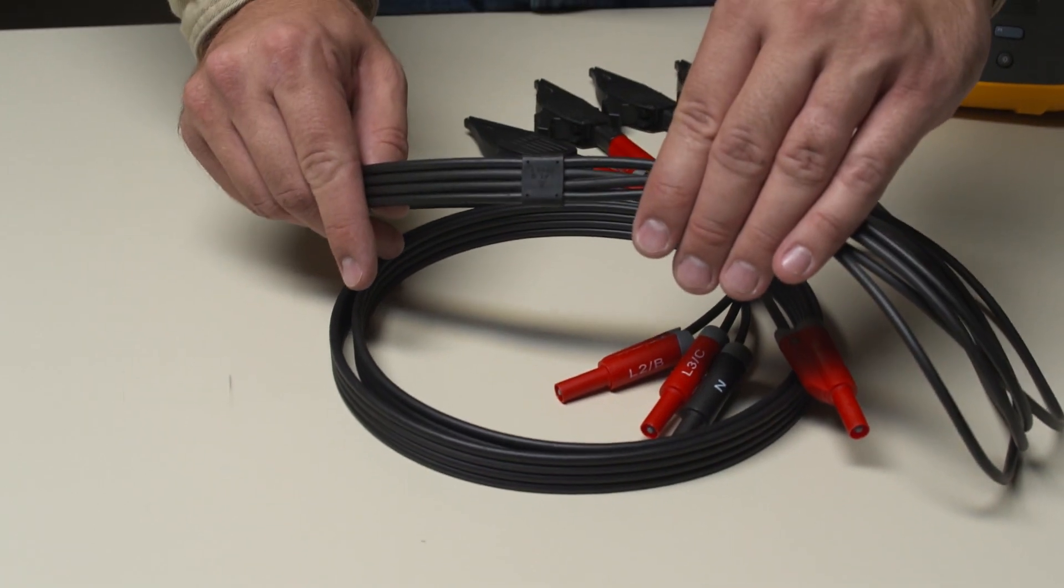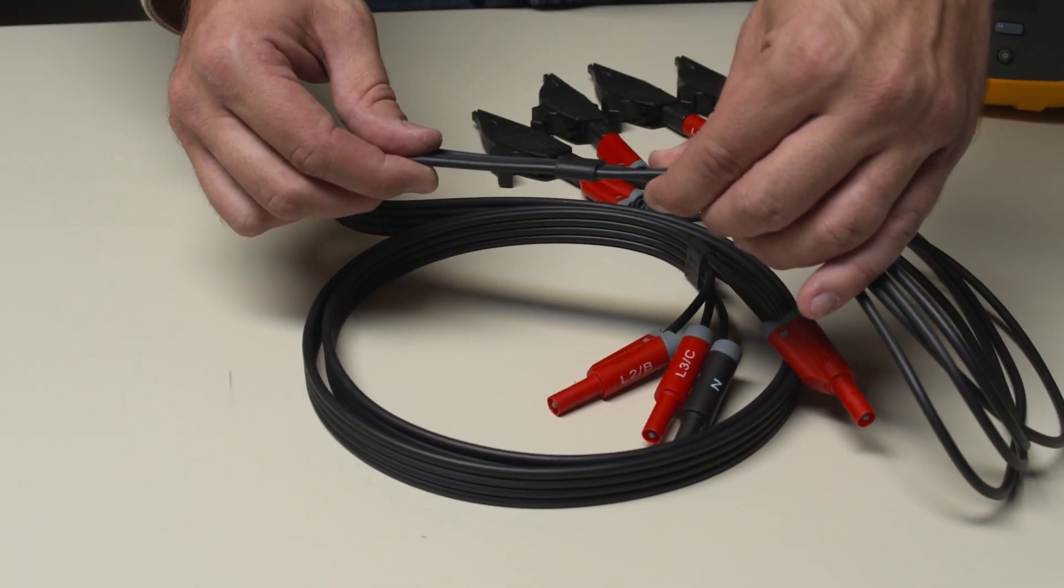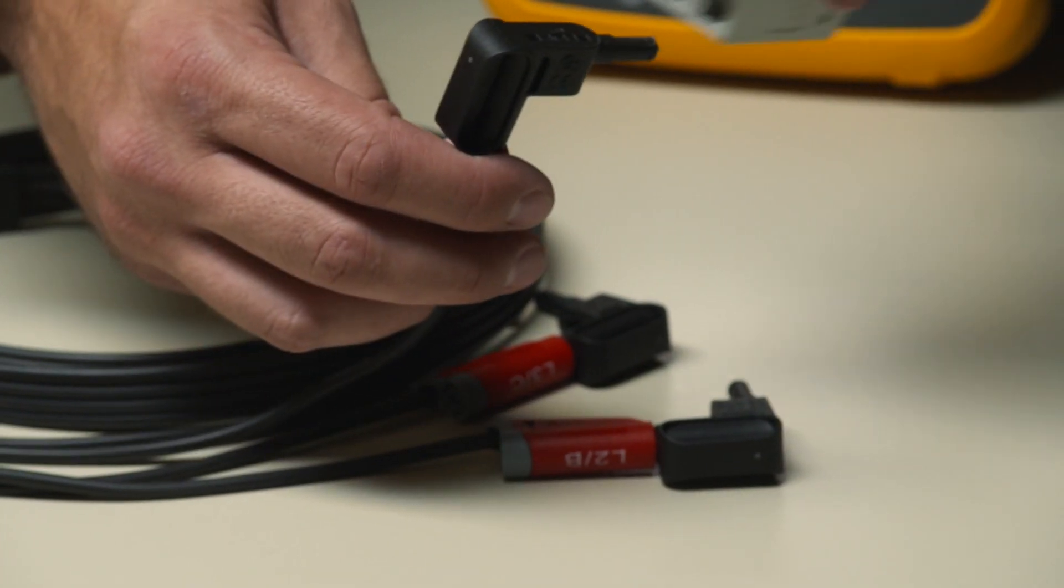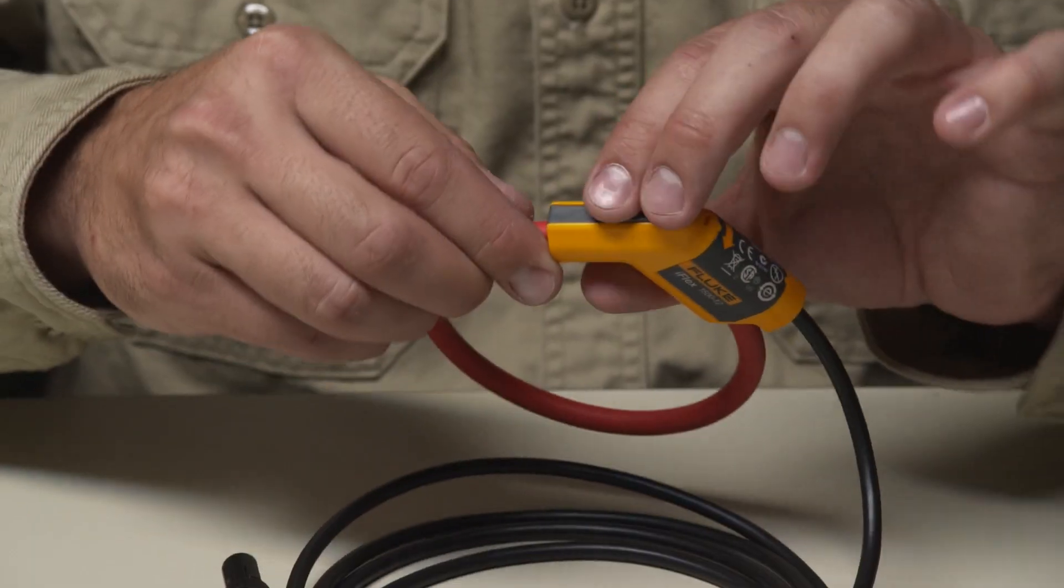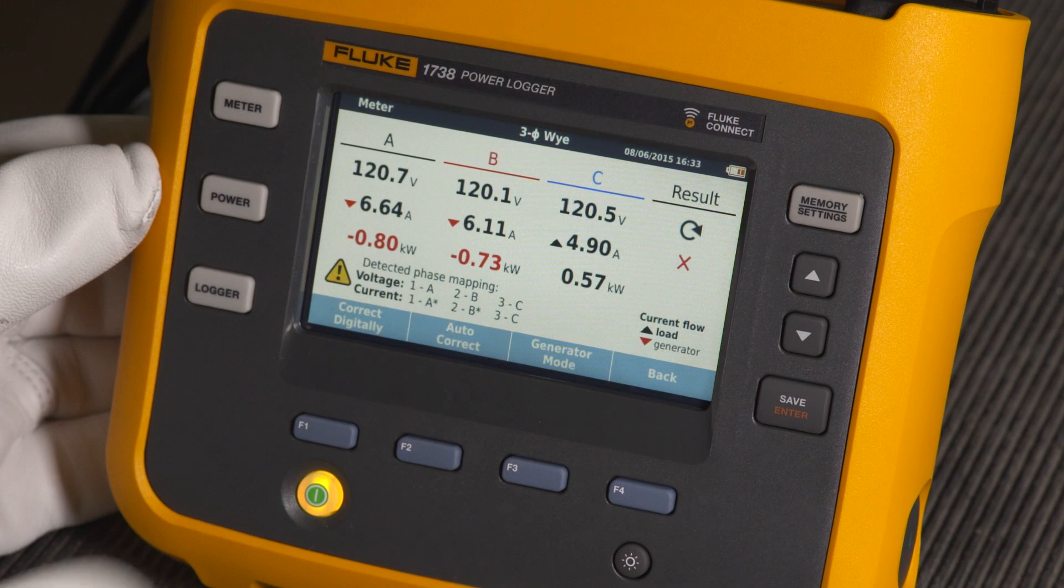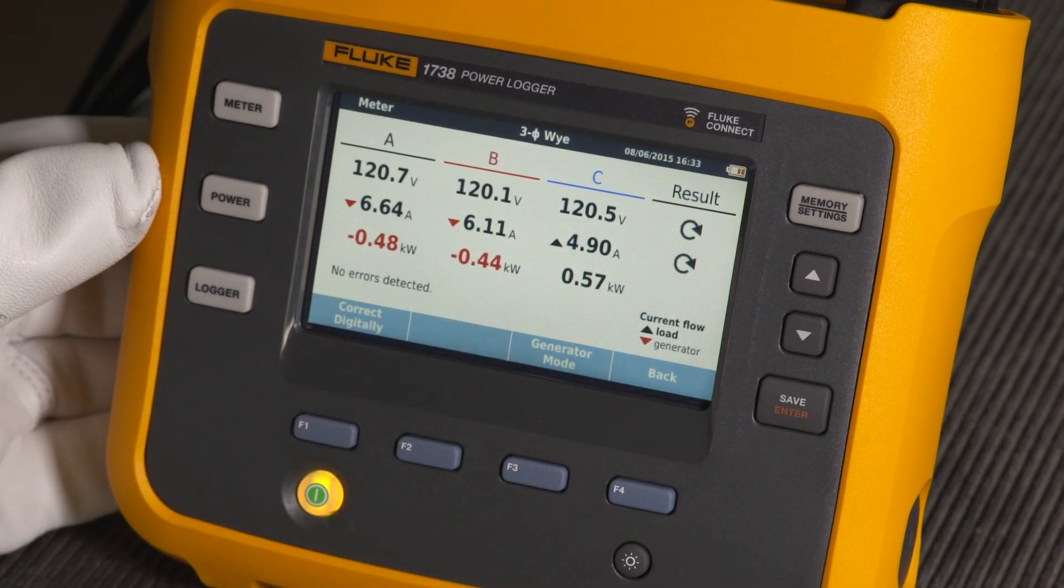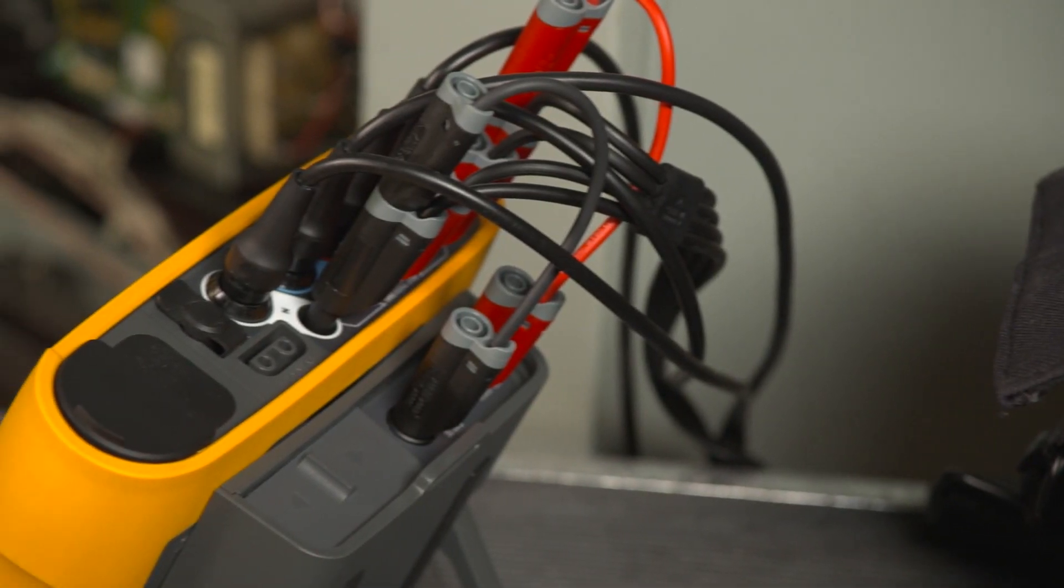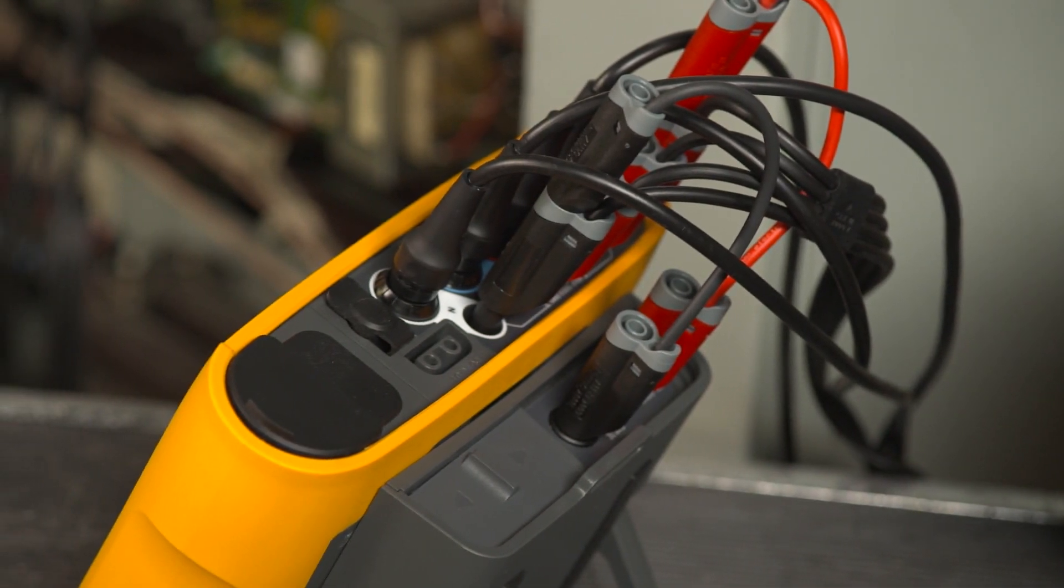Connection and installation has been optimized with easy-to-connect voltage leads, magnetic probe tips, thin flexible current probes, and an intelligent verification function that digitally corrects common connection issues. You can even power the unit directly from the measured line voltage.